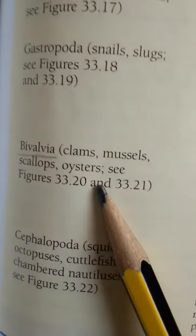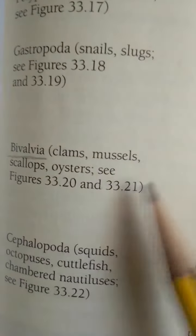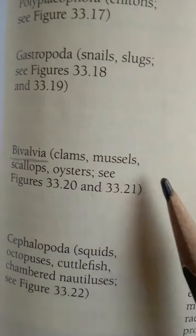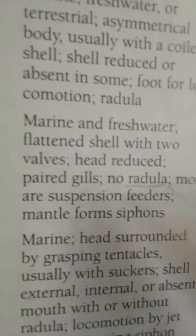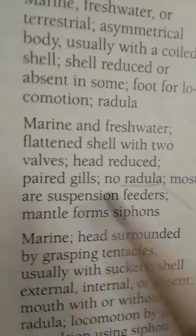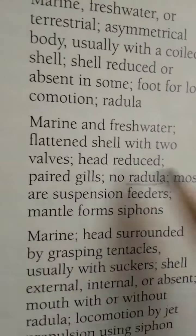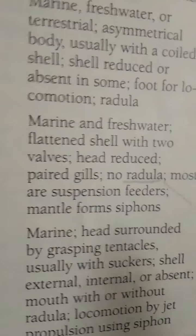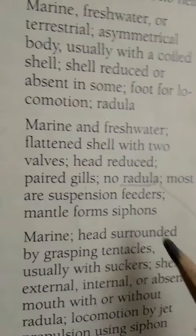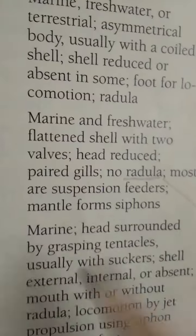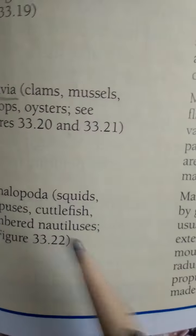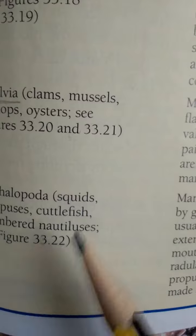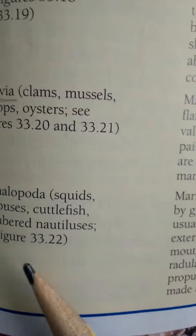Another example: Bivalvia — clams, mussels, scallops, oysters. Main characteristics: marine and freshwater, flattened shell with two valves. Have reduced or no radula. Most are suspension feeders; mantle forms siphons.